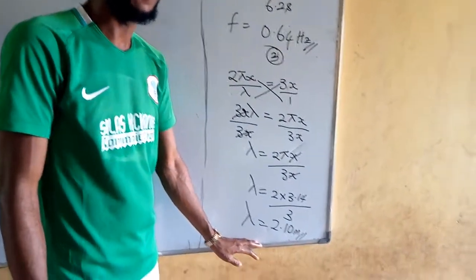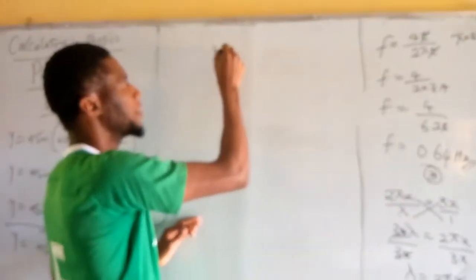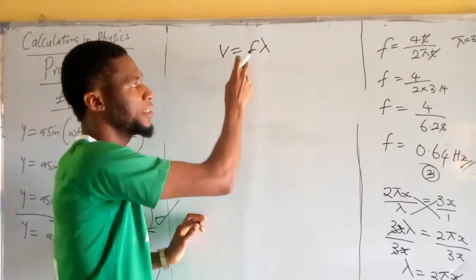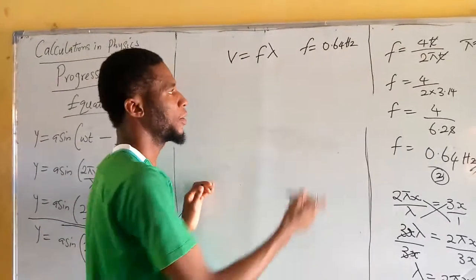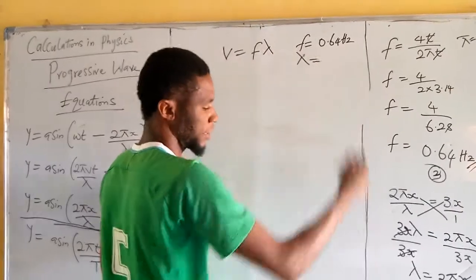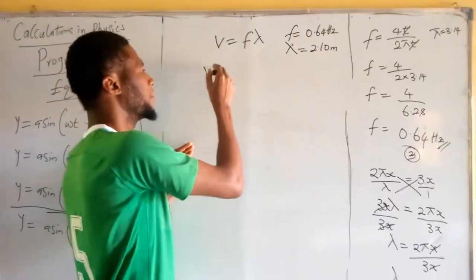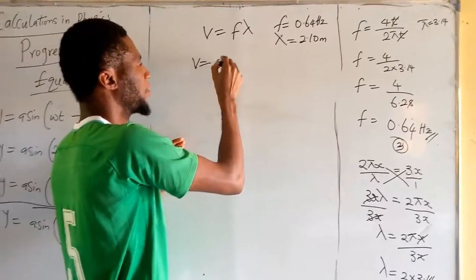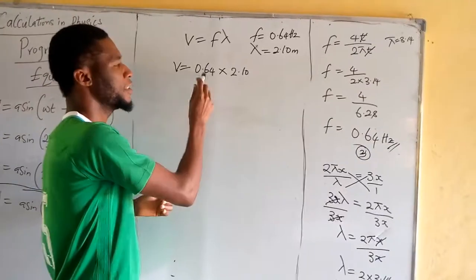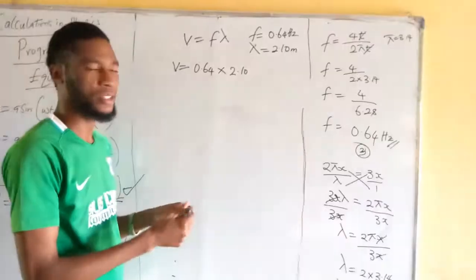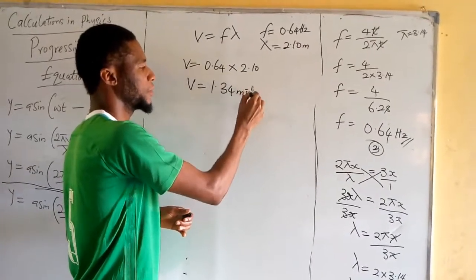Since we have calculated the wavelength, we can now calculate the speed. V equals frequency times wavelength. Our frequency is 0.64 Hz and our wavelength is 2.10 meters. So V equals 0.64 times 2.10, which gives approximately 1.34 meters per second.